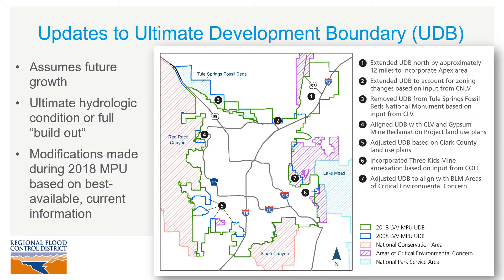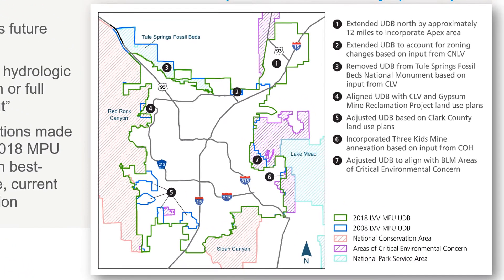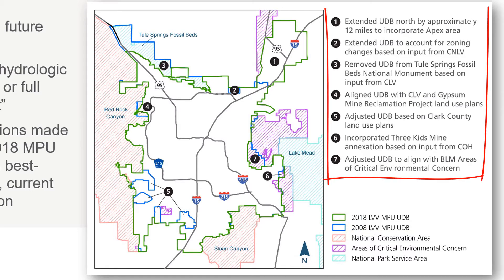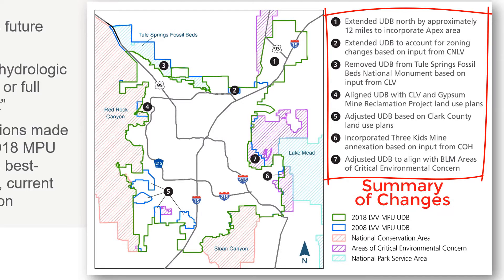During the 2018 MPU, this boundary was reviewed and several modifications were made based on best available information and input from different entities. The 2018 boundary is shown in green and the 2008 boundary is shown in blue for comparison purposes, and the changes are also summarized on the screen. You can review those in more detail in the report itself.